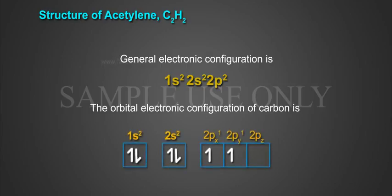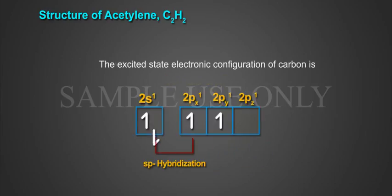The orbital electronic configuration of carbon is 1s2, 2s2, 2p2. The excited state electronic configuration of carbon is 2s1, 2px1, 2py1, 2pz1.